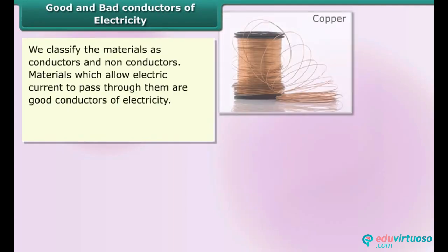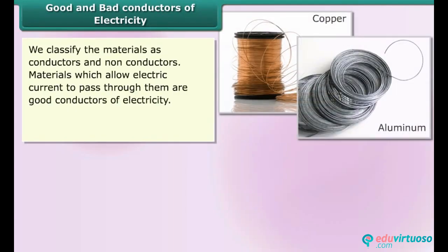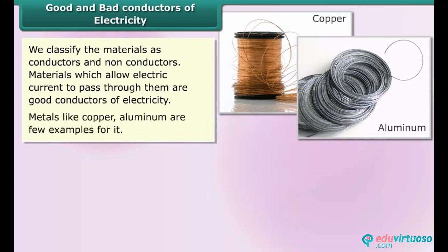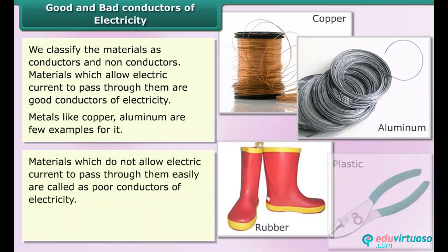We classify materials as conductors and non-conductors. Materials which allow electric current to pass through them are good conductors of electricity. Metals like copper and aluminium are few examples of it. Materials which do not allow electric current to pass through them easily are called poor conductors of electricity.